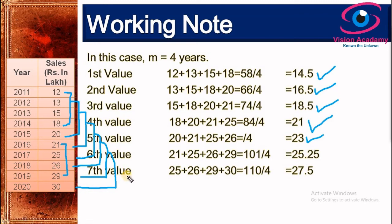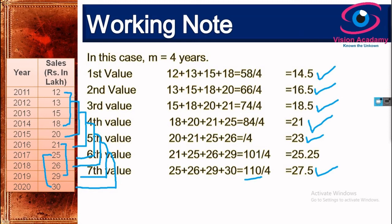For the seventh value, I discard 21 and consider 25, 26, 29, and 30, which accounts for 110 divided by 4, giving a seventh value of 27.5. Following all these steps we have obtained a new time series. Now let us compare the old and new time series values.